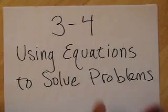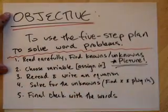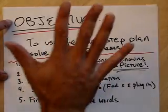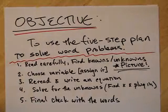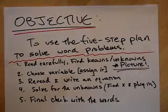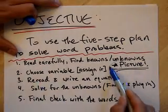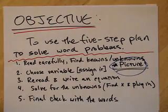What's the objective in Section 3-4? The objective is simply to use the five-step plan. We're back to the five-step plan again to solve word problems. Five-step says, read carefully. Find the knowns, the unknowns, and this, of course, is very important. Draw a picture. Just do it. Draw a picture. Get something in your brain. Get it in your mind. You want to be able to see what's happening.